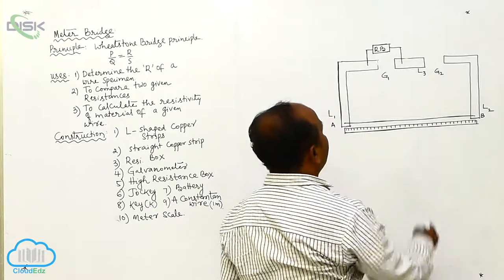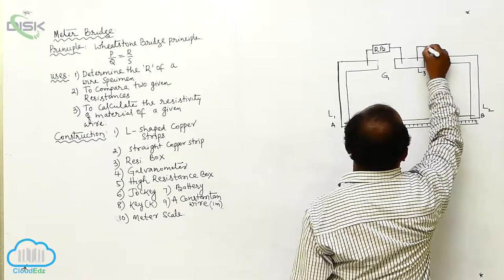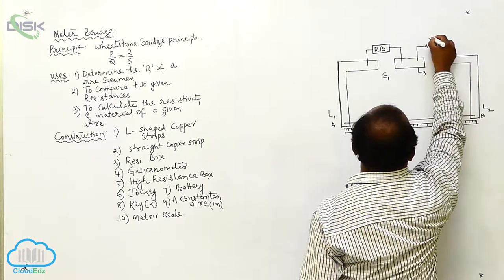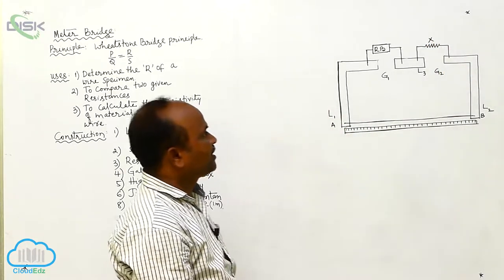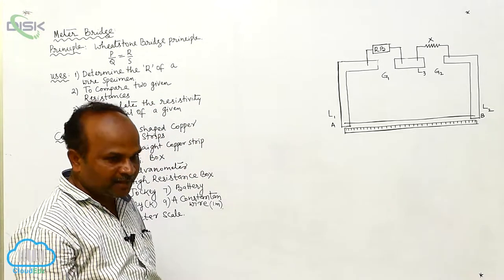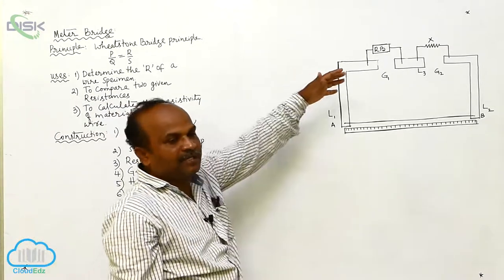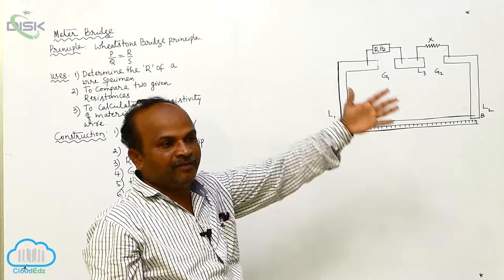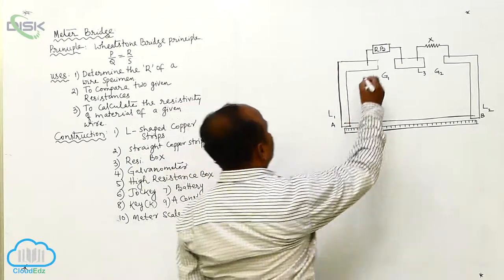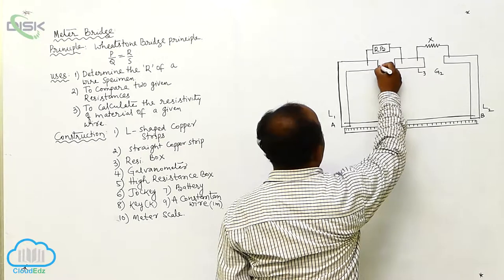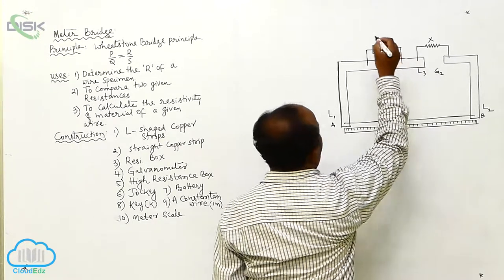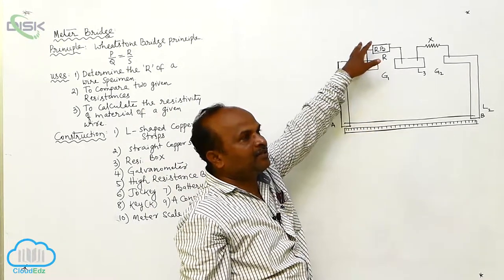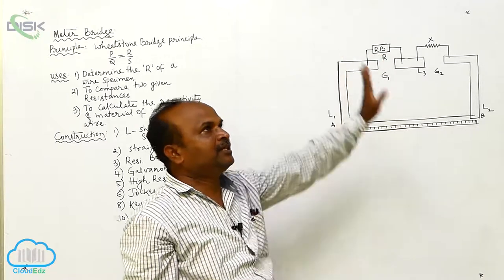In the second gap, you want to connect an unknown wire. This is called the unknown wire of resistance X. In the first gap, you want to connect a resistance box. In the resistance box, you may keep 5000 Ω, 10000 Ω, or 15000 Ω. You want to fix a particular resistance value R in the resistance box.